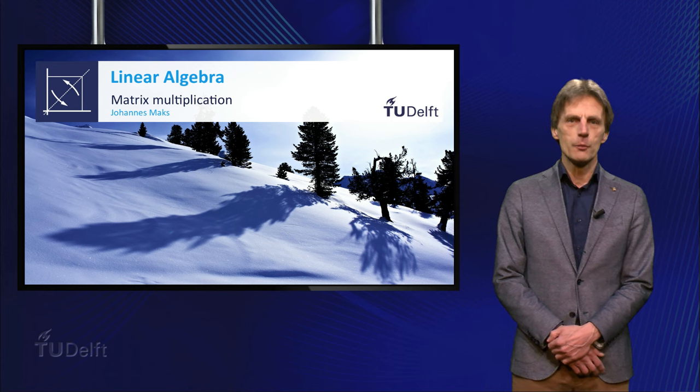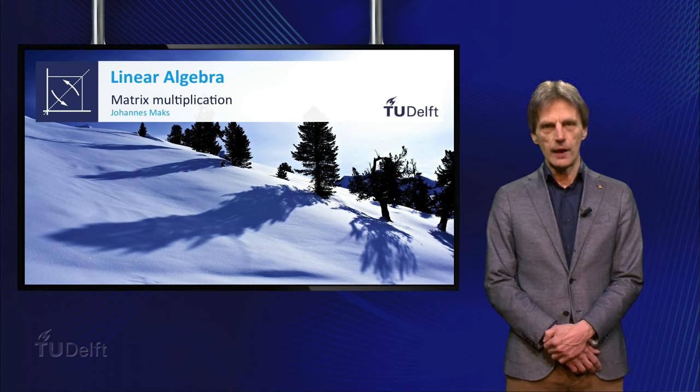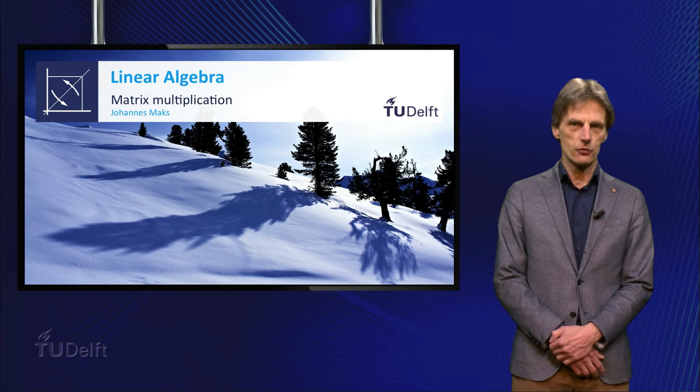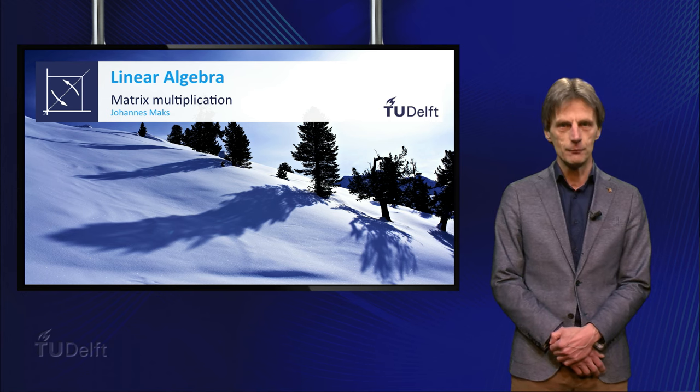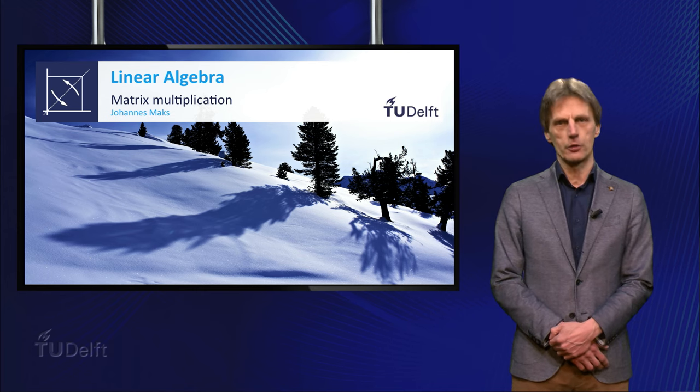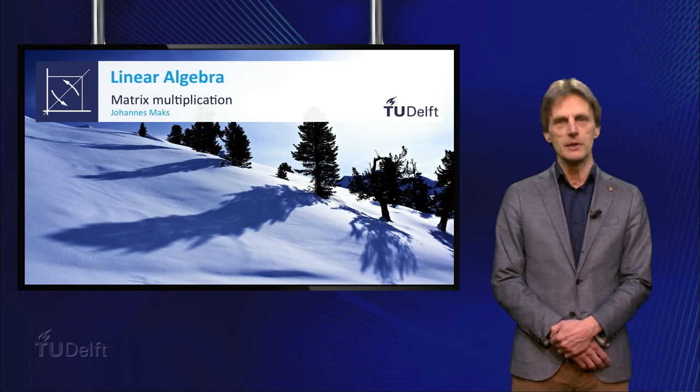You have already learned how to multiply a matrix A by a vector x, where the number of entries of x has to be the same as the number of columns of A. Can you guess how you can generalize that product to a product of a matrix A and another matrix B?